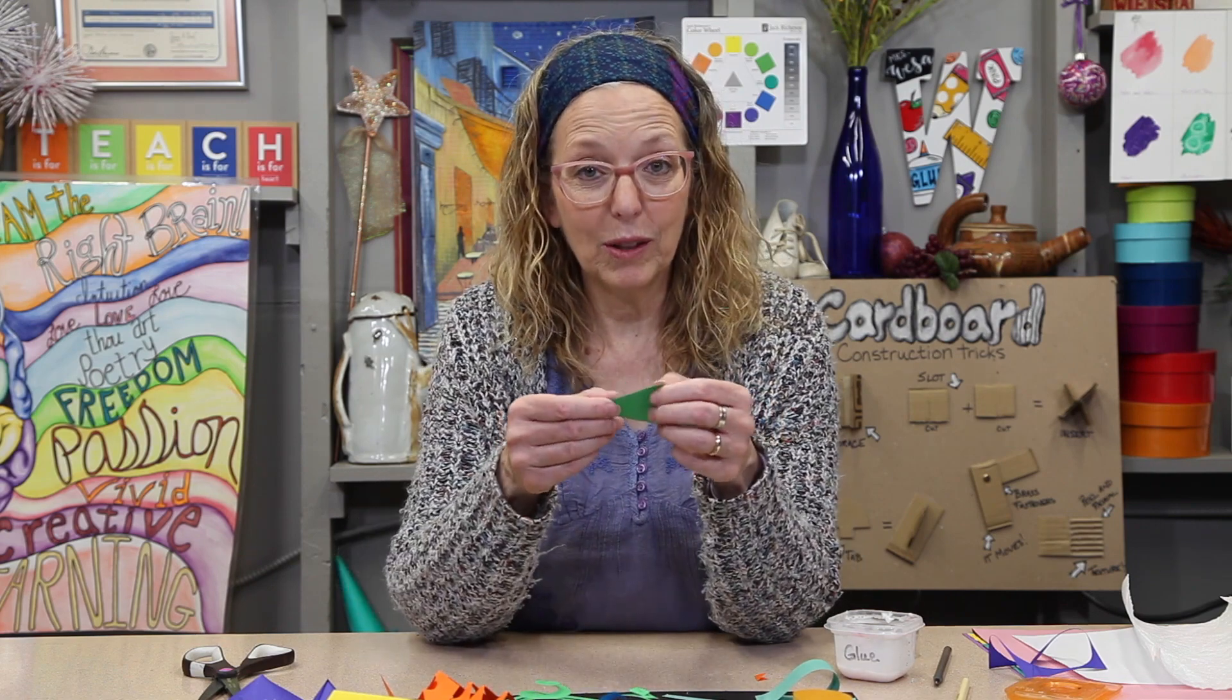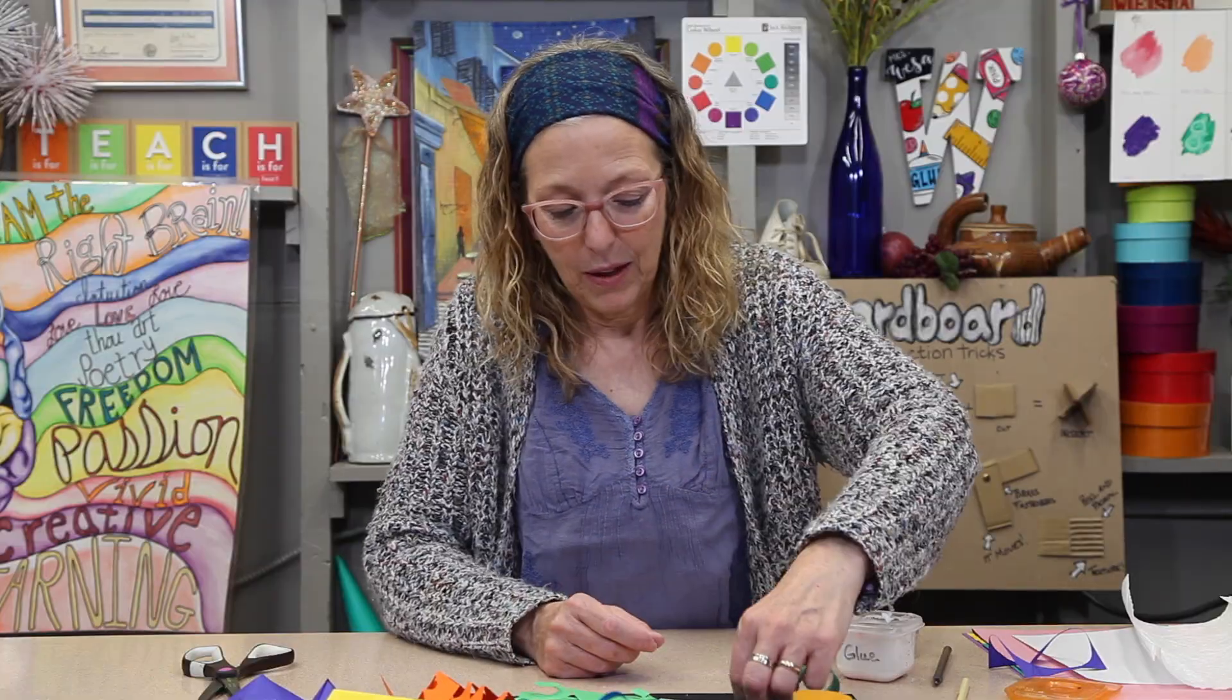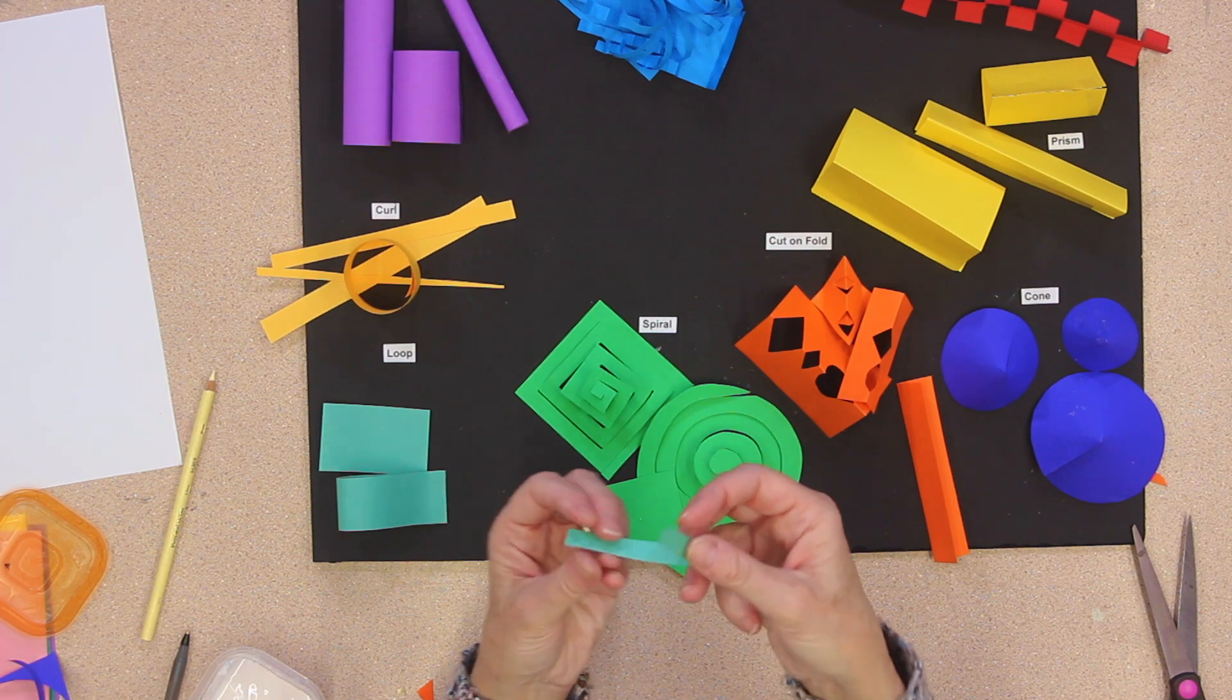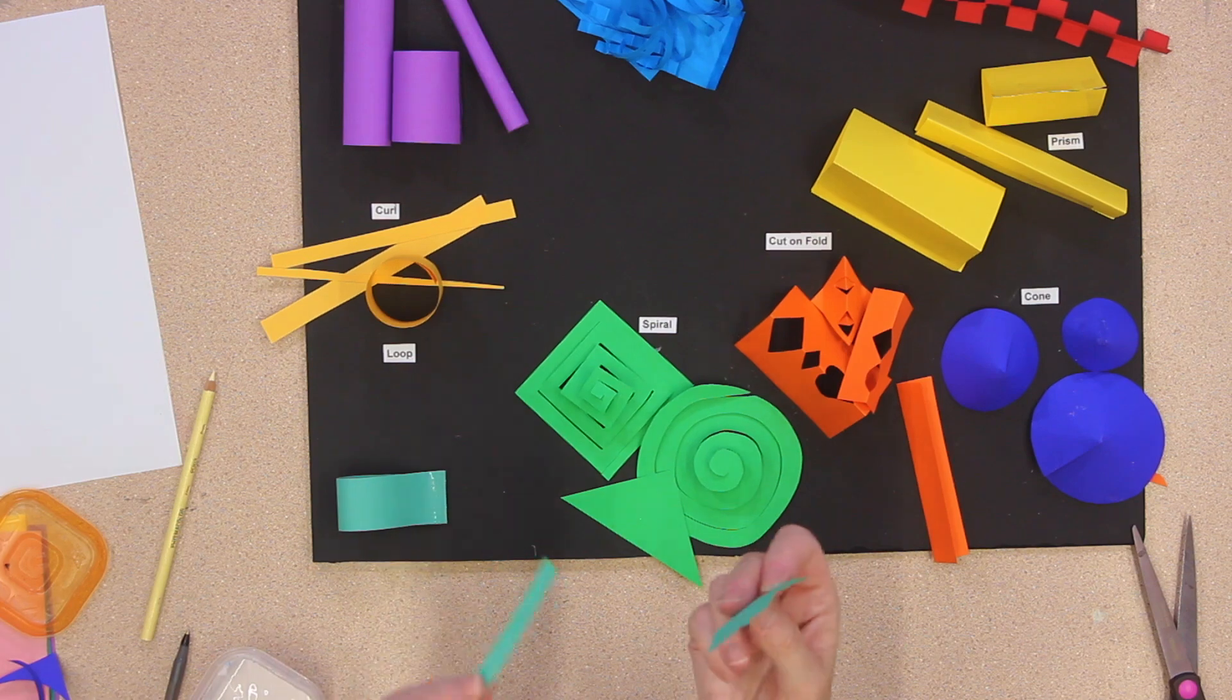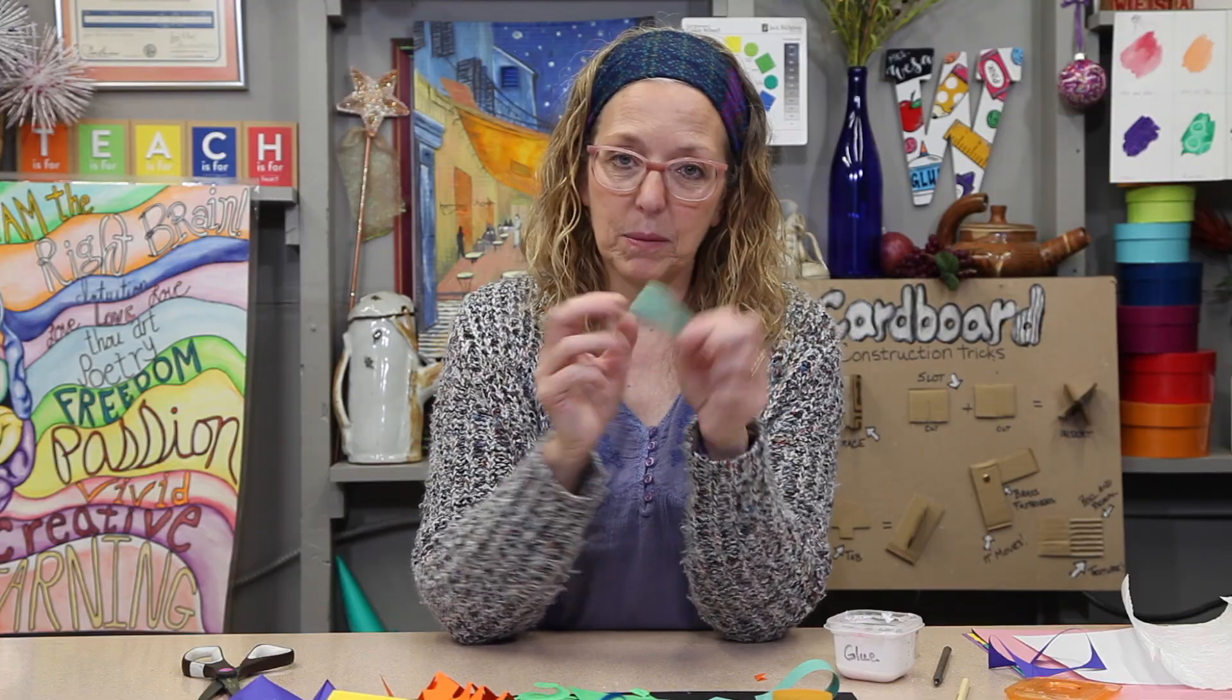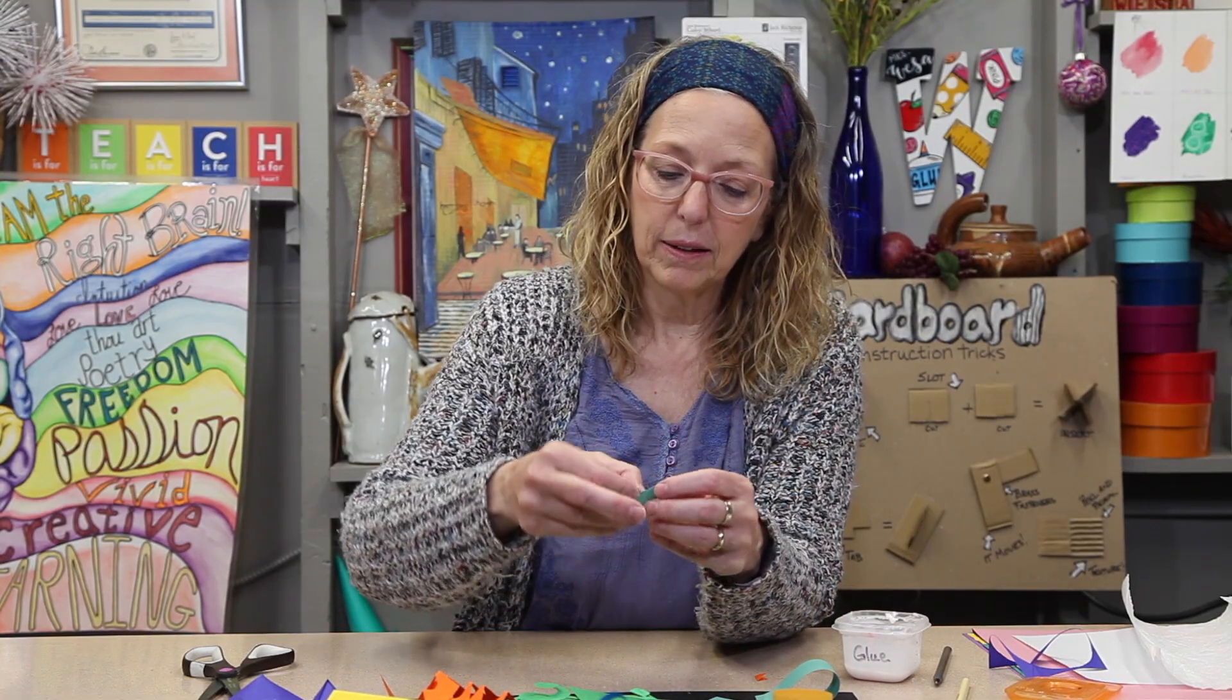All right. You can also do it with a triangle, square, anything else that you like. The next one is called simply a loop. So all you do is you take a piece of paper, whether it be a fat one, a long one, a short one, a skinny one, and you just take the two ends and you stick them together. So let's just take a little glue and squeeze.